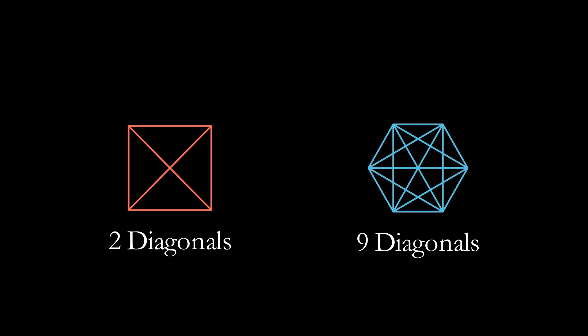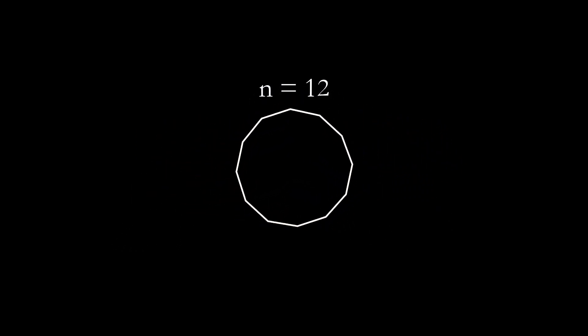You might remember from geometry class having to find the number of diagonals in shapes. For simple shapes like squares and hexagons, drawing the diagonals is an easy way to answer this question. But as the number of sides increases, this method isn't practical.